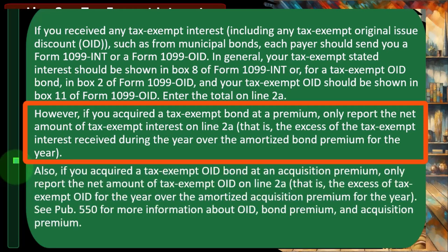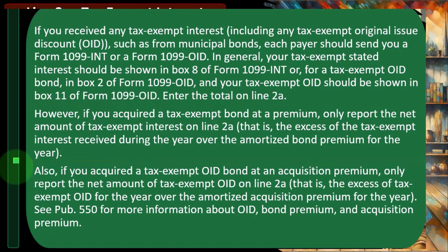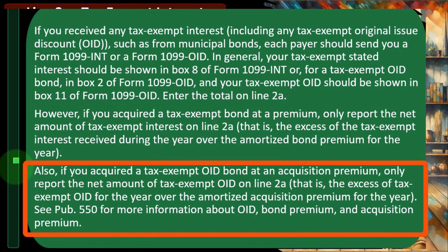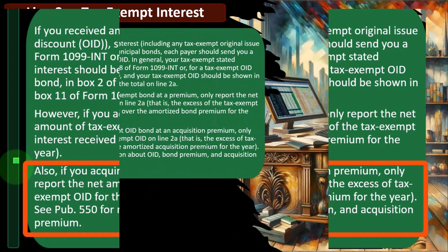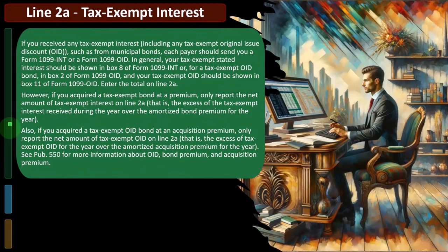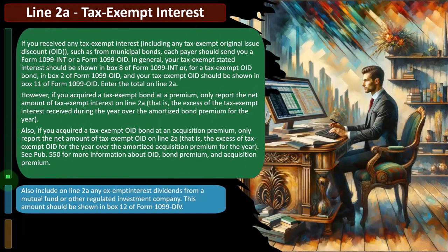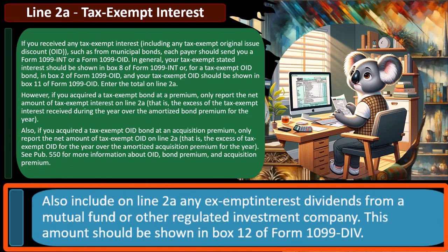But if you do, you can go to the IRS's website and drill down on further research. Also, if you acquired a tax-exempt OID bond at an acquisition premium, only report the net amount of tax-exempt OID on line 2A — that is the excess of the tax-exempt OID for the year over the amortized acquisition premium for the year. See Publication 550 for more information about OID, bond premium, and acquisition premium if that is relevant to you.